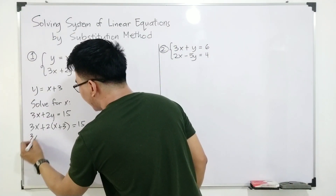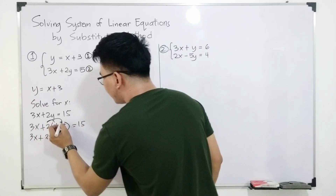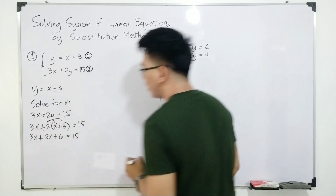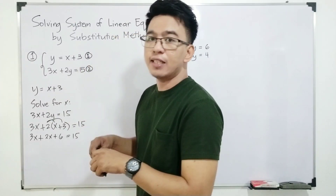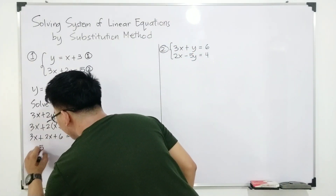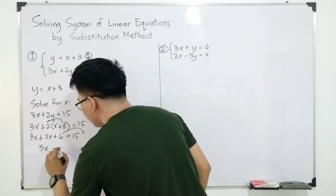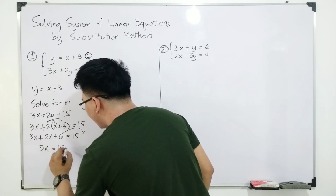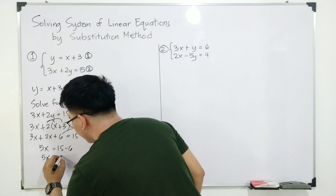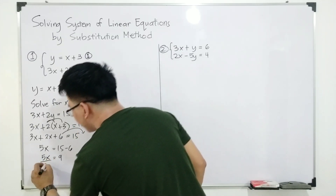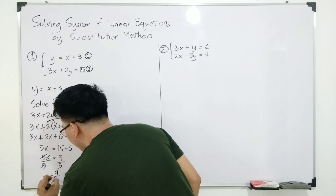To solve for x, we simplify: 3x + 2x + 6 = 15. Combining like terms gives 5x + 6 = 15. Transposing 6 to the other side: 5x = 15 − 6 = 9. Dividing both sides by 5, your x = 9/5.